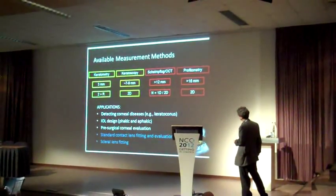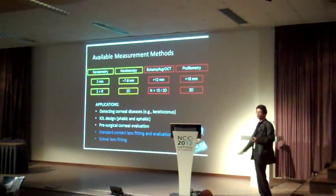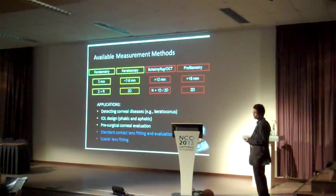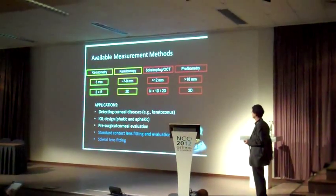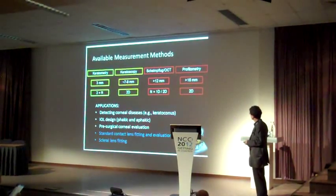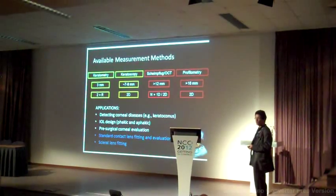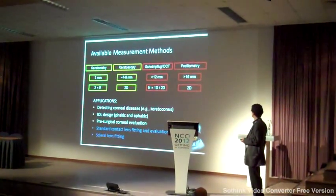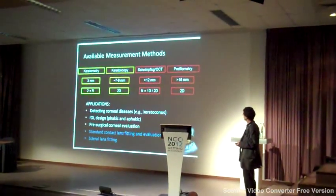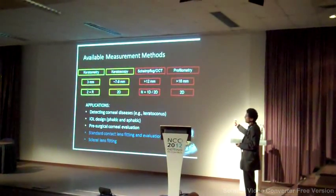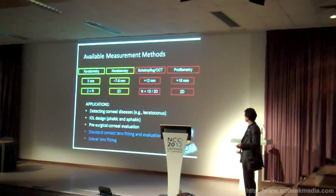To summarize those techniques: keratometry gives us essentially two radii of curvature. The refractive power we get from that is just an estimate, and we can play with the refractive index to get that right. With keratoscopy, we get from 7 to 9 mm — some companies will claim up to 11 mm. With Scheimpflug, we can get better, but of course we have only N times 1D slices from which we have to build a two-dimensional map.